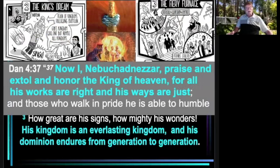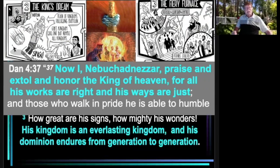Look at what he writes at the beginning and the end of chapter 4. At the end, verse 37: 'Now I, Nebuchadnezzar, praise and extol and honor the king of heaven, for all his works are right and his ways are just. And those who walk in pride, he is able to humble.' And then the beginning in verse 3: 'How great are his signs! How mighty his wonders! His kingdom is an everlasting kingdom, and his dominion endures from generation to generation.' Do you think it is possible that the king of the world, Nebuchadnezzar, has humbled himself and become a believer? Kind of sounds that way, don't you think?